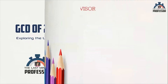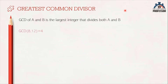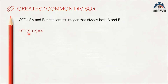The greatest common divisor of two numbers A and B is the largest integer that divides both A and B. For instance, GCD of 8 and 12 is 4. Let us see how to calculate GCD of 8 and 12 in a step-by-step fashion.